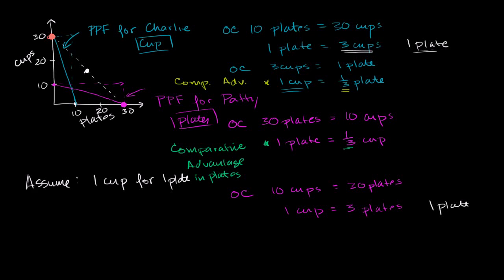In this video we want to understand the difference between comparative advantage and absolute advantage. What we saw in the last video is that Patty had a comparative advantage in plates relative to Charlie because her opportunity cost of producing one plate was lower than Charlie's — hers was one third of a cup, his was three cups. Charlie had a comparative advantage in cups: his opportunity cost for producing a cup was only a third of a plate, while Patty's was three plates.